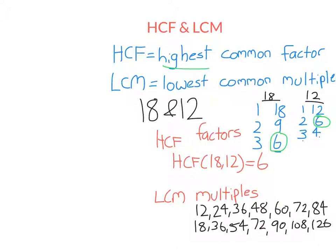When we're talking about multiples, we want the lowest number that appears in both lists. Hopefully you can see that is 36. Now 72, for example, also appears in both lists, but it is not the lowest number in both lists. The answer is 36. So the lowest common multiple of 18 and 12 is 36.